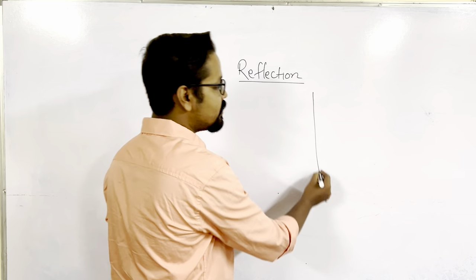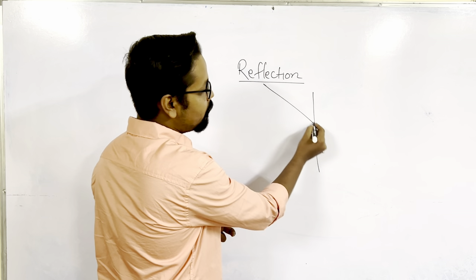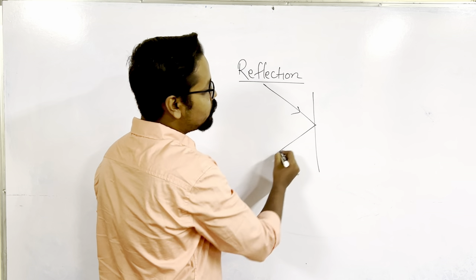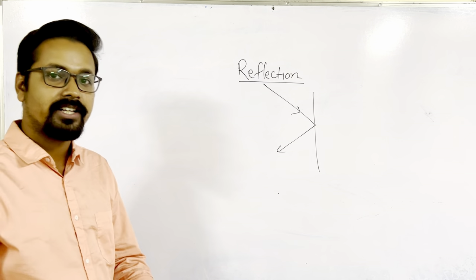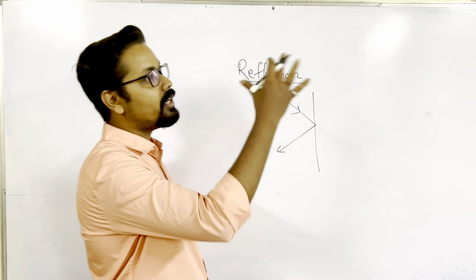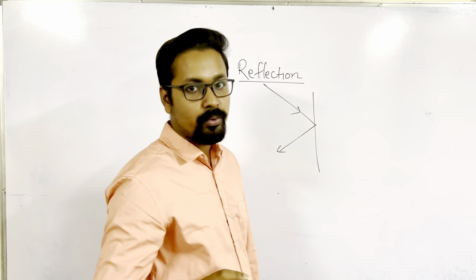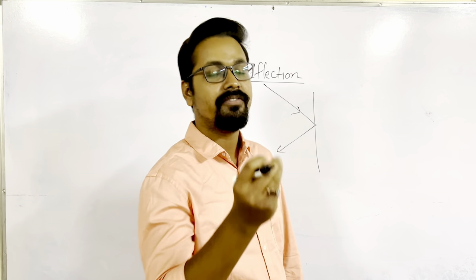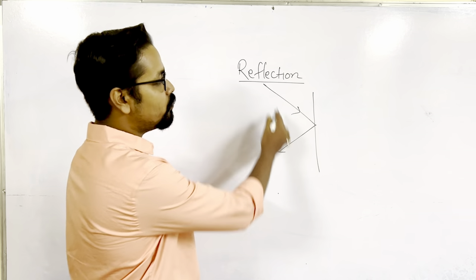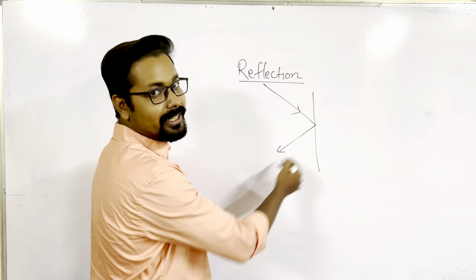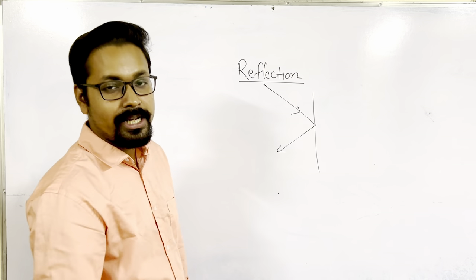Reflection means light comes and bounces off a surface. Every object which we can see is visible because it allows light to fall on it and then bounce off.